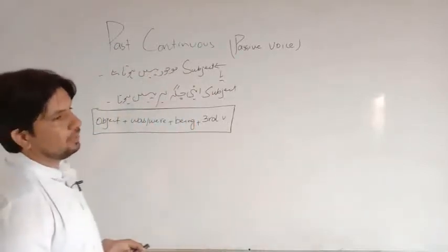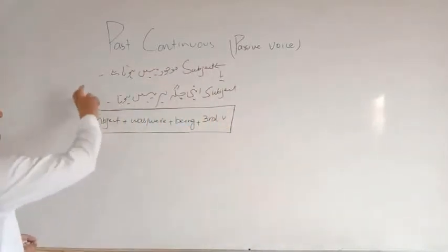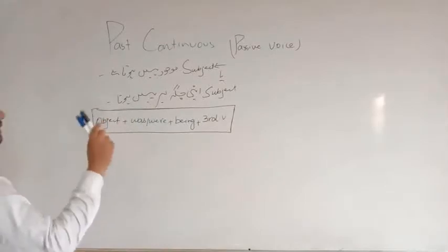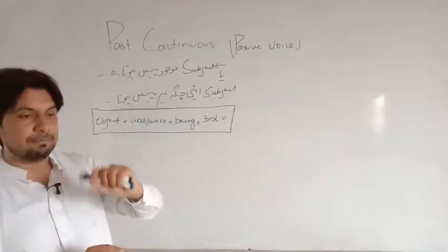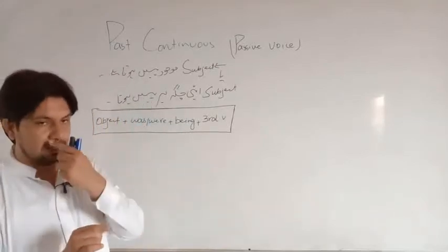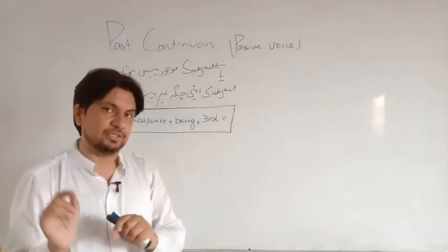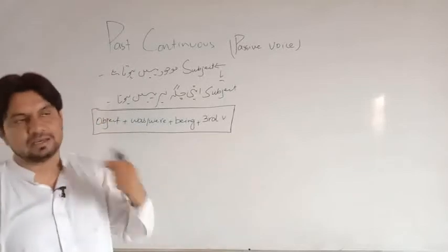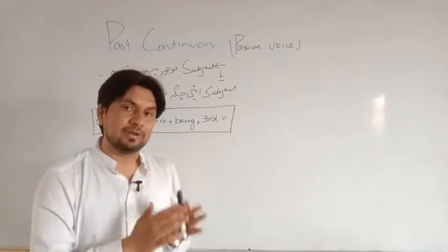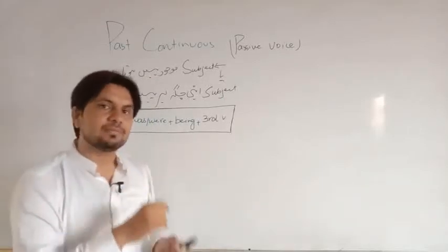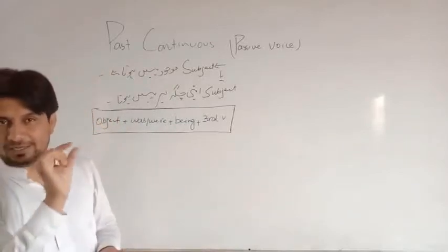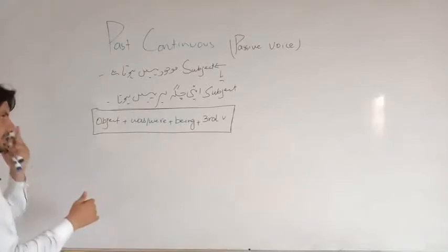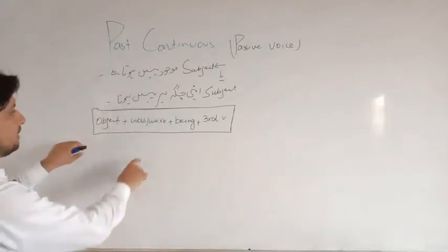Today I am going to teach you a very important topic which is Past Continuous Passive Voice. آپ پہلے ہی active voice کے بارے میں پڑھ چکے ہیں۔ آج ہم past continuous کے passive voice کے بارے میں پڑھیں گے۔ Active voice کے اندر ہم نے پڑھا تھا کہ was اور were کے بعد present participle آتی ہے - he was eating meal, she was cooking meal, we were eating meal, I was eating meal, they were eating meal۔ Negative میں was اور were کے بعد not استعمال ہوتی ہے، اور interrogative sentences میں ہم was اور were کو اٹھا کے subject سے پہلے لگاتے ہیں۔